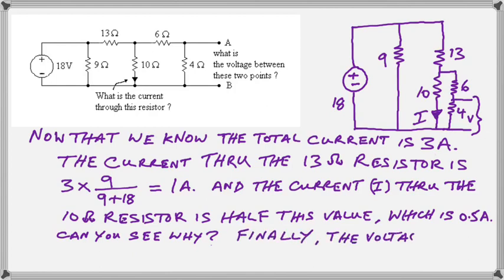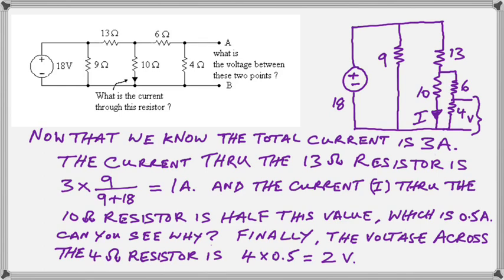Finally, we are interested in what voltage is across the 4 ohm resistor. And just using Ohm's law, we multiply the resistance by the current, and we see that 2 volts, 2 volts is across the 4 ohm resistor, or between points A and B.